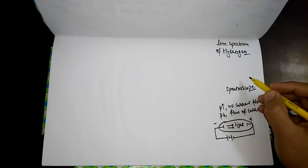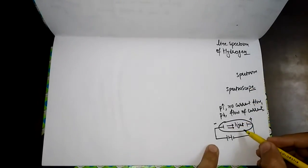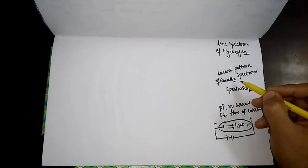A spectrum is basically a recorded film on which the pattern of emitted radiations are recorded. The number of radiations having a particular pattern form a complete series appearing on the spectrum. The complete spectrum is known as the hydrogen spectrum.